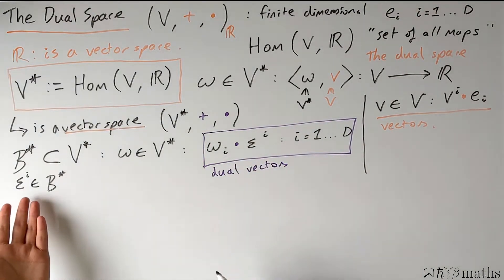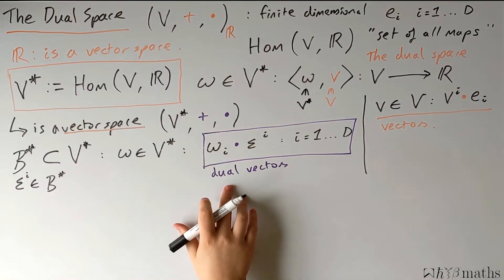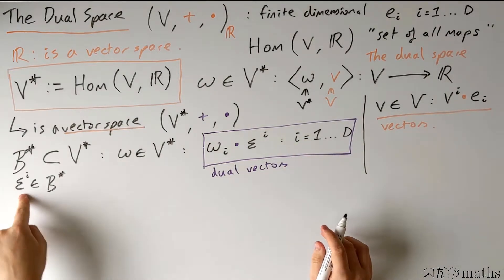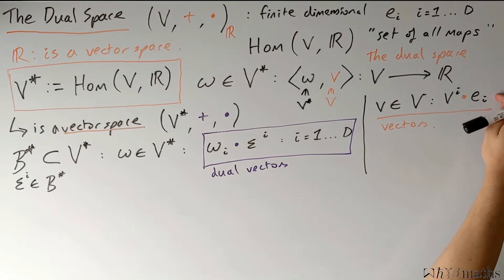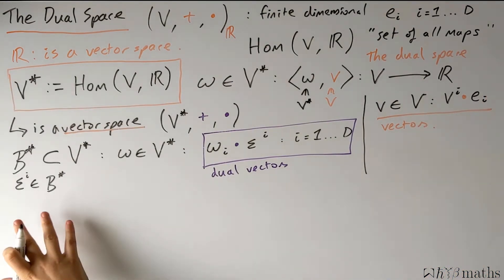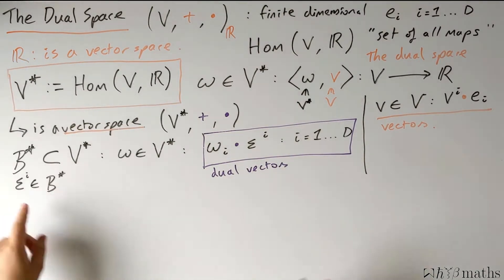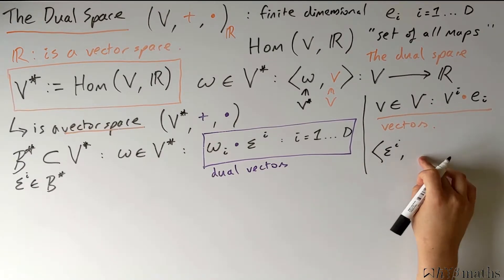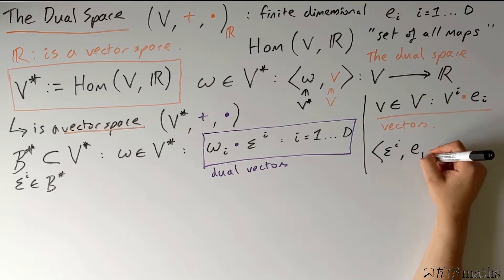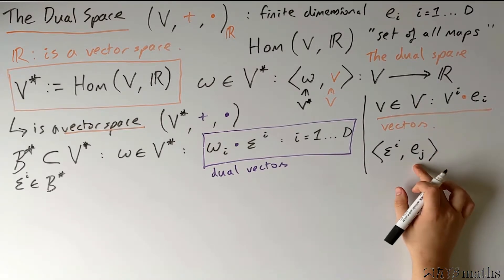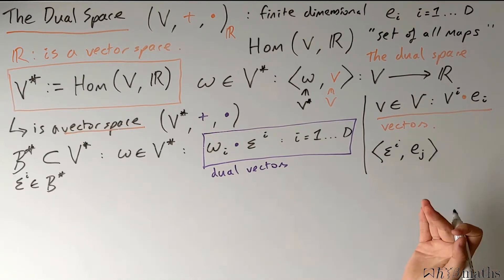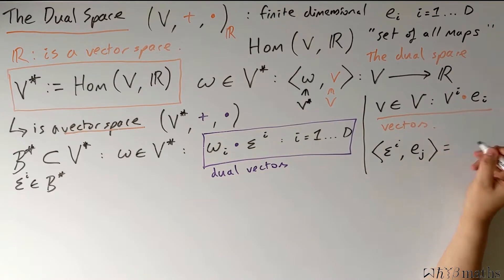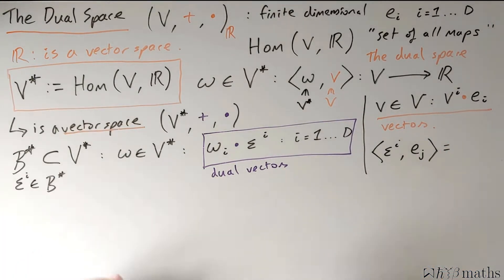So we now know how to express any dual vector in terms of the dual basis, but we still don't know what this dual basis actually is. We would expect the dual basis to be related to the vector basis in some way. The easiest way to see this is to realise that the dual basis is just a map, so it can act on a vector — specifically, we can let it act on the vector basis. We don't yet know how to compute this, so we simply need to make a choice of what this should be, which then defines how the dual basis is related to the vector basis.